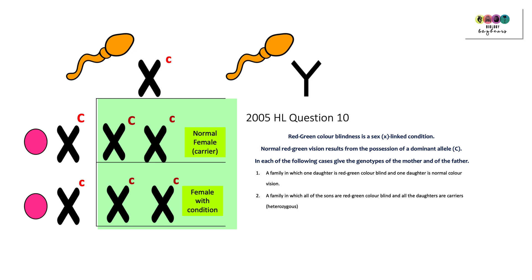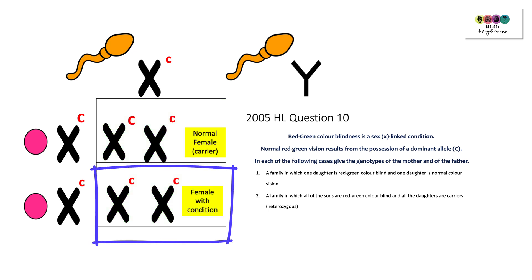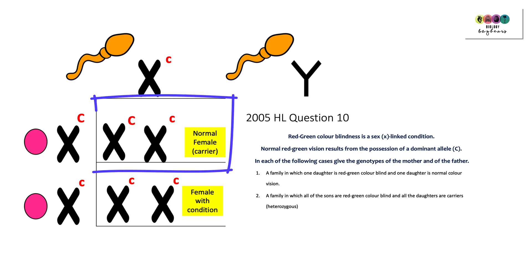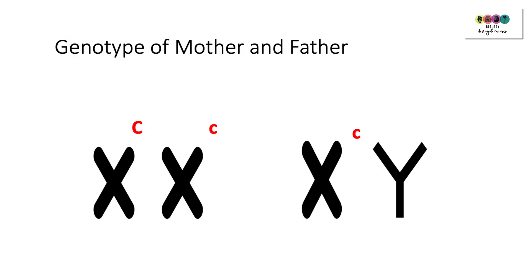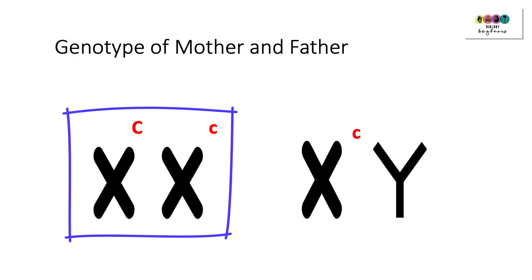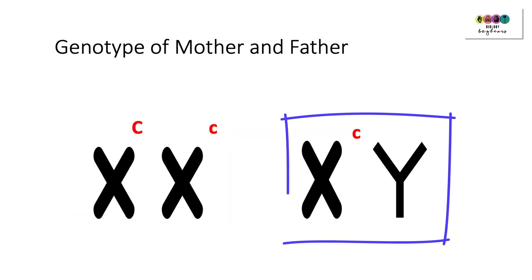The colour-blind female has two small c's — one came from the mother and one had to have come from the father. The normal sister XX also has a small c from the father, but she must have received the dominant allele capital C from the mother. So the genotype of the mother is XX with one capital C and one lowercase c — she's a heterozygous carrier — and the father is XY with a lowercase c, meaning he has the condition.